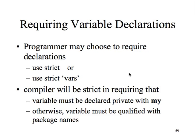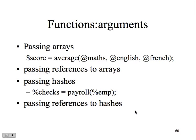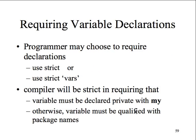Requiring variable declarations: programmers may choose to require declaration using 'use strict' or 'use strict vars'. The compiler will be strict in requiring that variables must be declared private with 'my', otherwise variables must be qualified with package names. You can set this in the header where you also suppress warnings, essentially setting the environment for how you want to run the program.